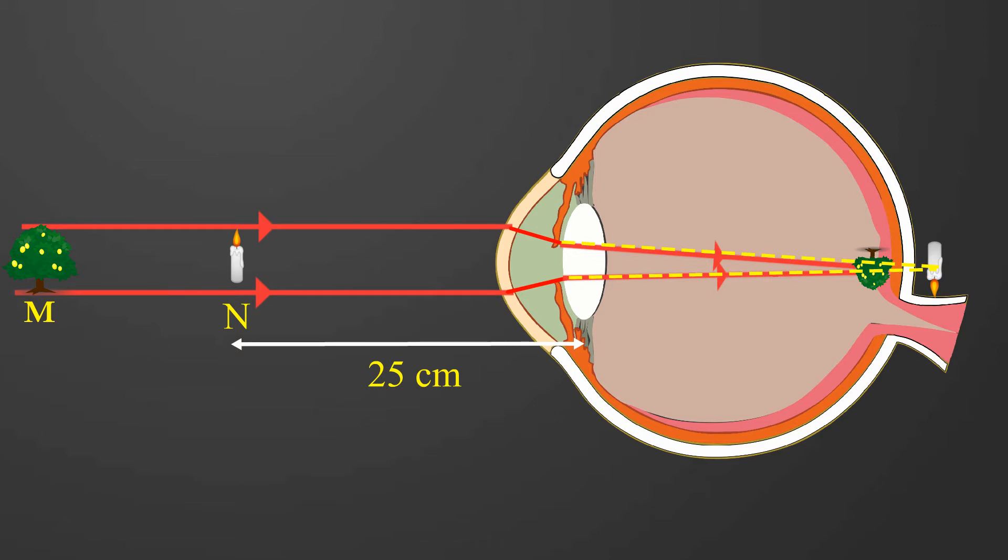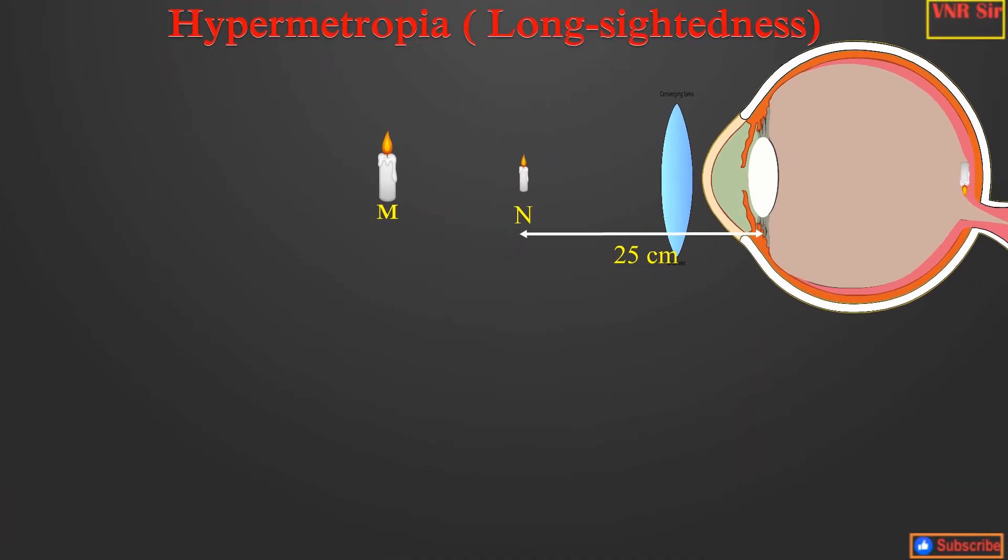So this can be corrected by using a suitable convex lens. When a convex lens is placed in front of the eye lens, the object which is placed at N forms an image at point M, so that the person can see near objects very clearly.